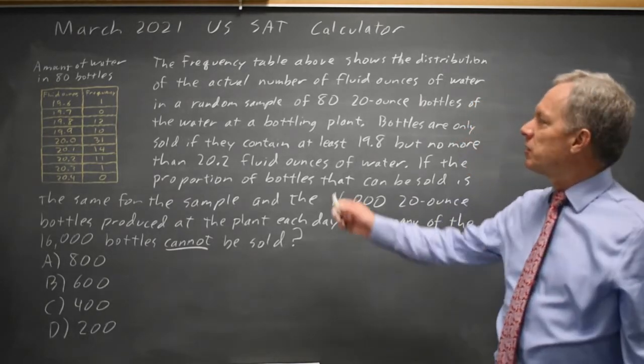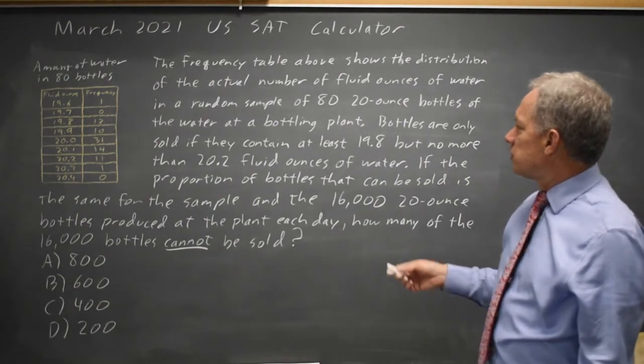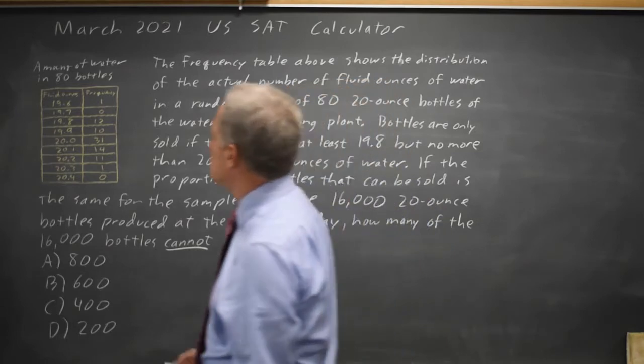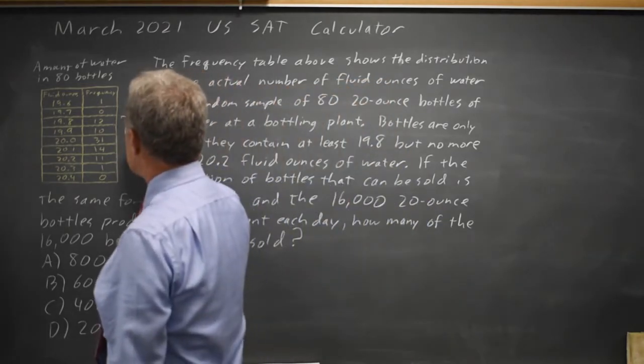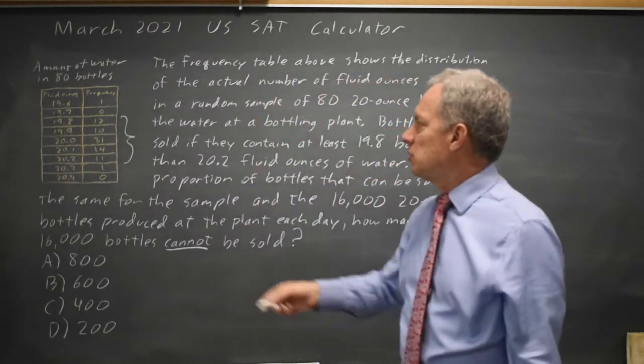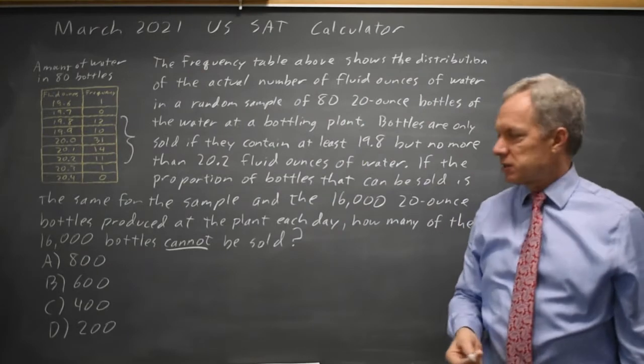College Board is asking about a proportion. We're told that bottles can only be sold if they contain 19.8 to 20.2 fluid ounces. So that's this interval. And in this sample, only two bottles out of 80 cannot be sold.